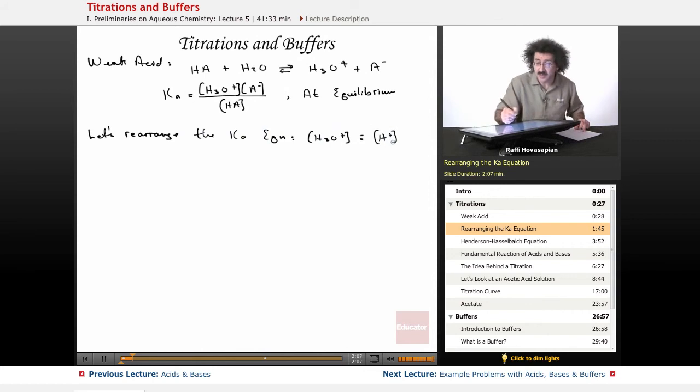So I'm going to use H plus instead of the H3O plus. When I rearrange this to solve for the hydronium ion concentration or the H plus, I move this over here and I move this down here, I get the following.